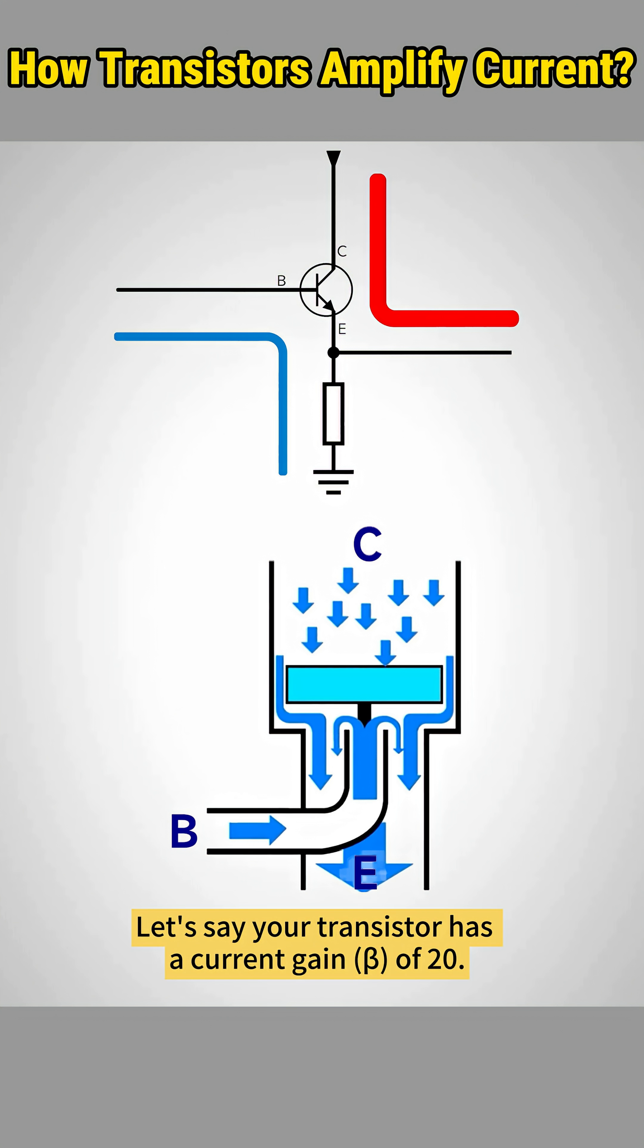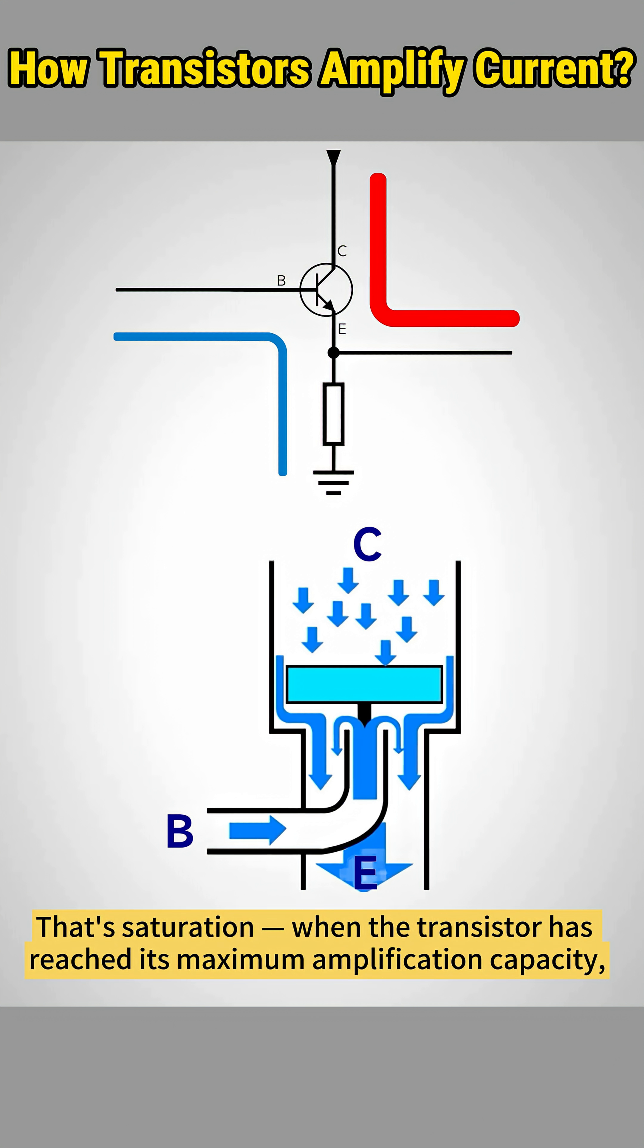Let's say your transistor has a current gain of 20. That means 1 amp current between base-emitter gives 20 amps current between collector-emitter. But when the transistor saturates, even if the base-emitter current increases to 2 amps, the collector-emitter current stays at 20 amps. No more increase in output. That's saturation.